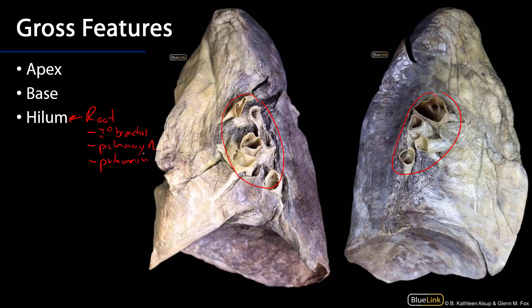As we look superiorly, we can see the apices of the lungs, and inferiorly we can see the bases of the lungs. The bases of the lungs are rather concave because they're sitting upon a convex surface of the diaphragm.